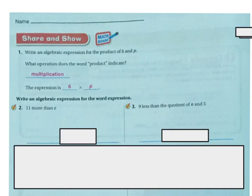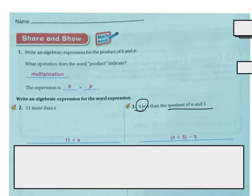Write algebraic expressions for these word problems. '11 more than E'—'more than' means add, so it's 11 plus E. This one's trickier: '9 less than the quotient of N and 5.' The quotient of N and 5 is division, so N divided by 5. Then 9 less means subtracting, so we have N divided by 5, in parentheses, minus 9. The rest is on your own. You can work with a partner, and I'm always here for you. Good luck.